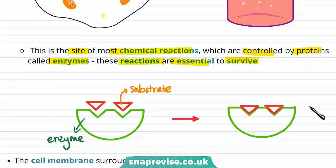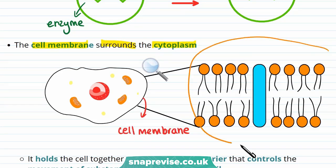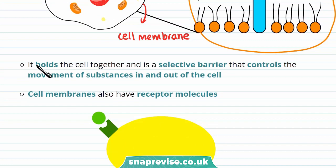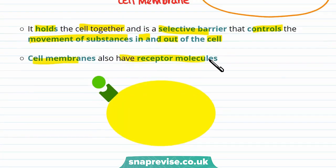The cell membrane surrounds the cytoplasm. For exams you don't need to know the exact structure of the cell membrane, but you do need to know its function. Its function is that it holds the cell together and is a selective barrier that controls the movement of substances in and out of the cell. Cell membranes also have receptor molecules on the cell surface that can bind to chemicals such as hormones.